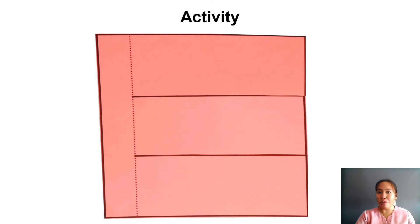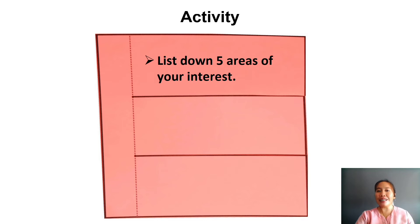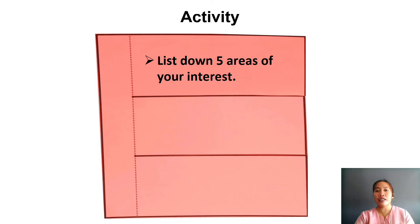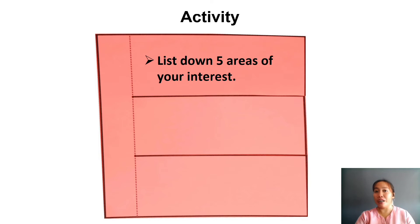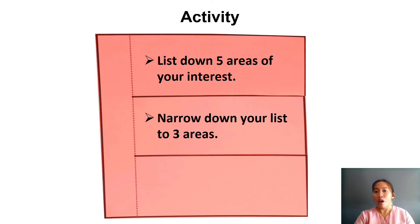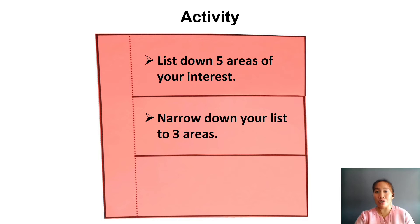Before we proceed to our discussion, I want you to get a notebook and list down five areas of your interest, like the following: language and words, culture and traditions, biography or a life study of someone, novels, short stories, poems, song lyrics, political beliefs, or social issues.